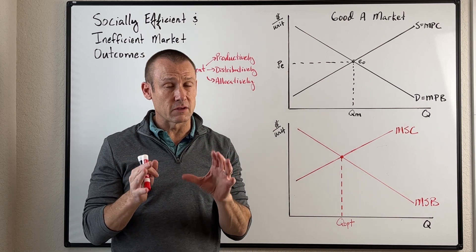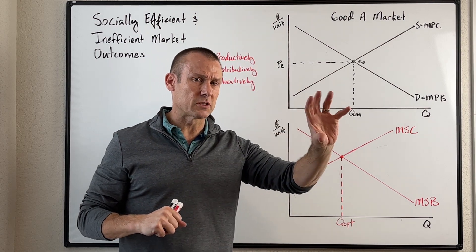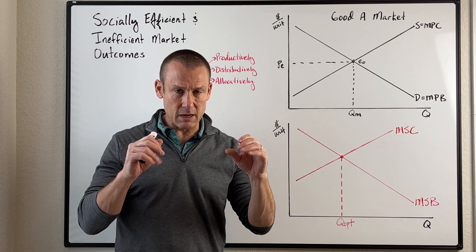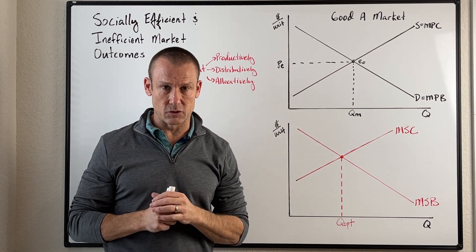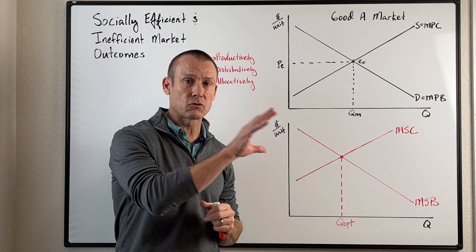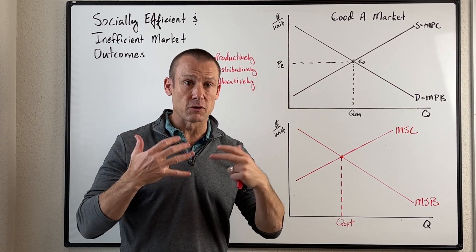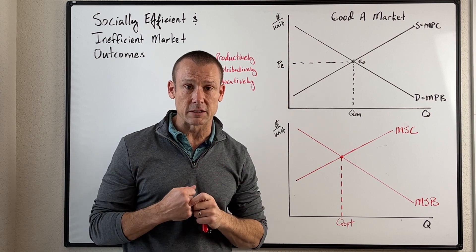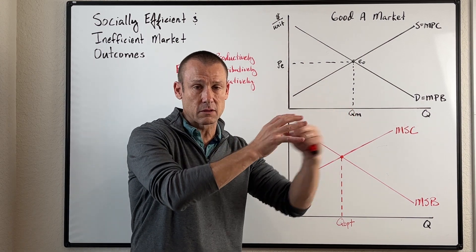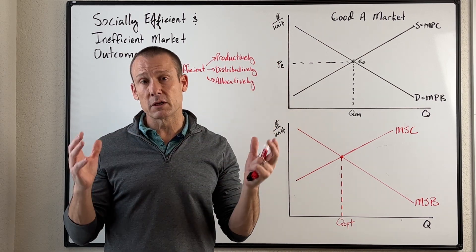Every economy in the world is essentially a mixed economy. There might be a few that are pretty much centrally planned across the board, but they're very few. Most economies are a mixture. In the United States, we do have some central planning — government deciding those really important decisions — for things like national security, public safety, and K-12 education.